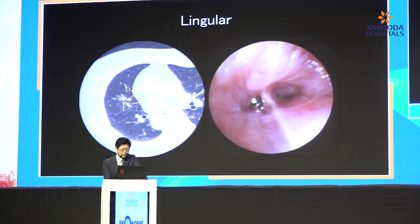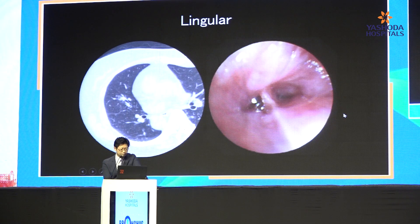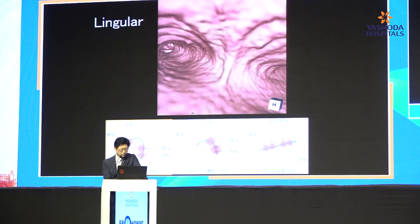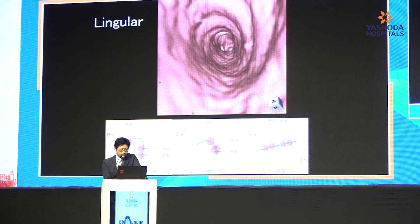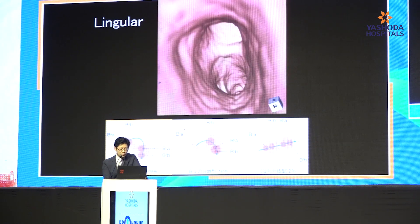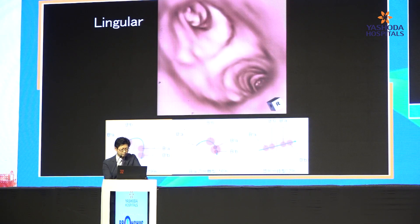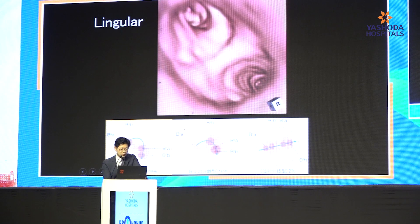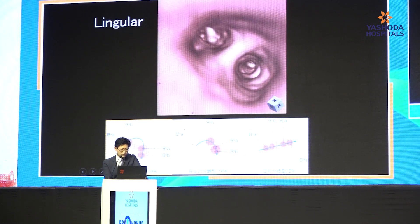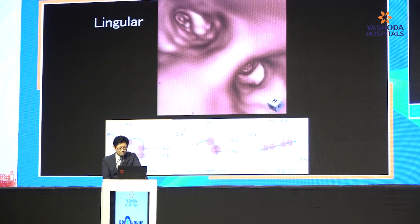And next, B4A small one and small two. Here you can see some abnormality — this is not all lingula. This is left B3 and lingula. So sometimes B1 plus 2 and B3 is divided.